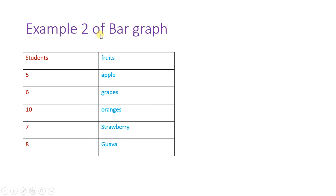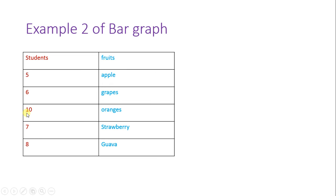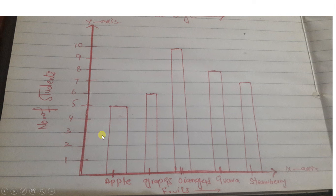Now I'm moving towards example number two that is related to the bar graph. Here is the number of students and their favorite fruits. We have to see what is the highest frequency. The higher number of students is 10, so I will write till 10: 1, 2, 3, 4, 5, until 10.